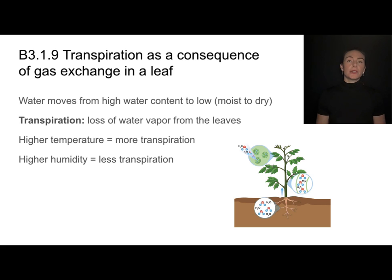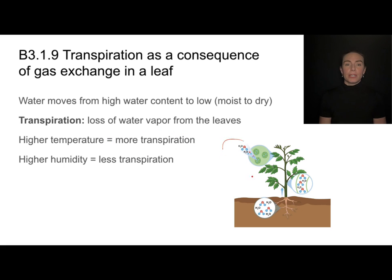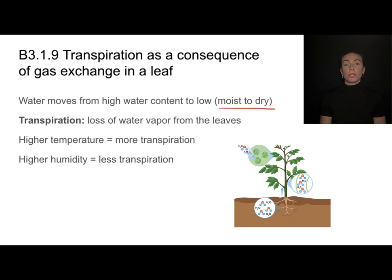There are certain factors that make transpiration happen faster or slower. Higher temperature increases transpiration because there's more evaporation from the leaf. If there's a very humid area — lots of water content in the air — that results in less transpiration because there's a smaller difference in water vapor content.